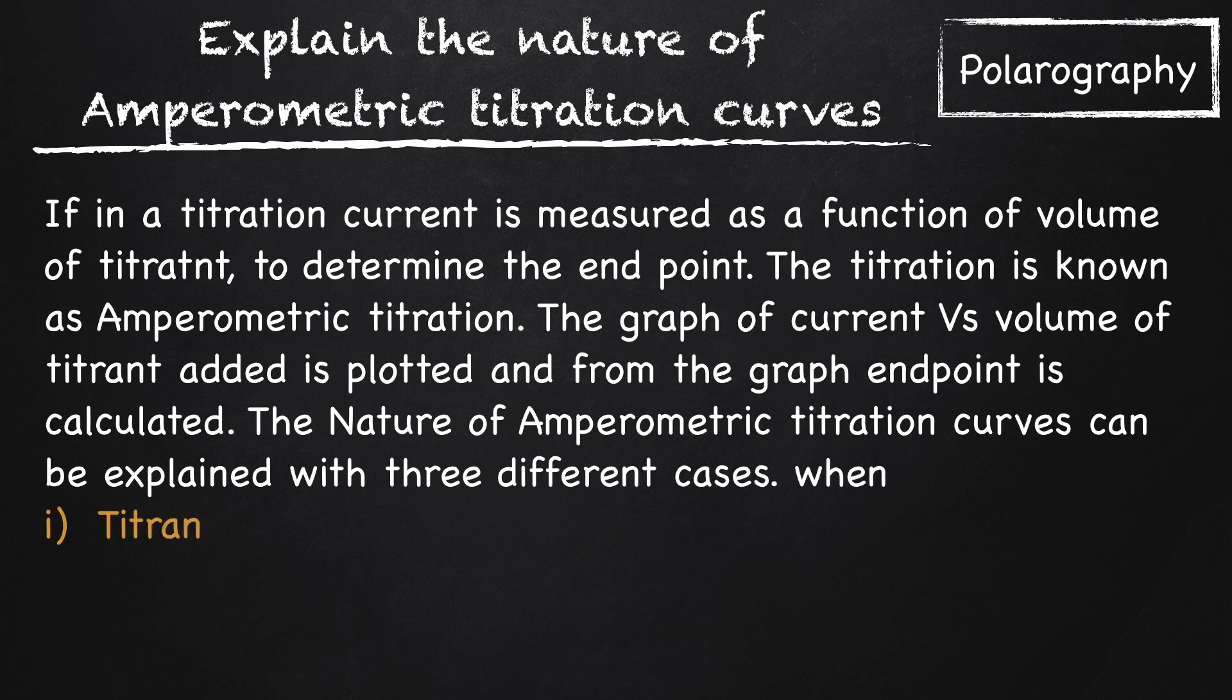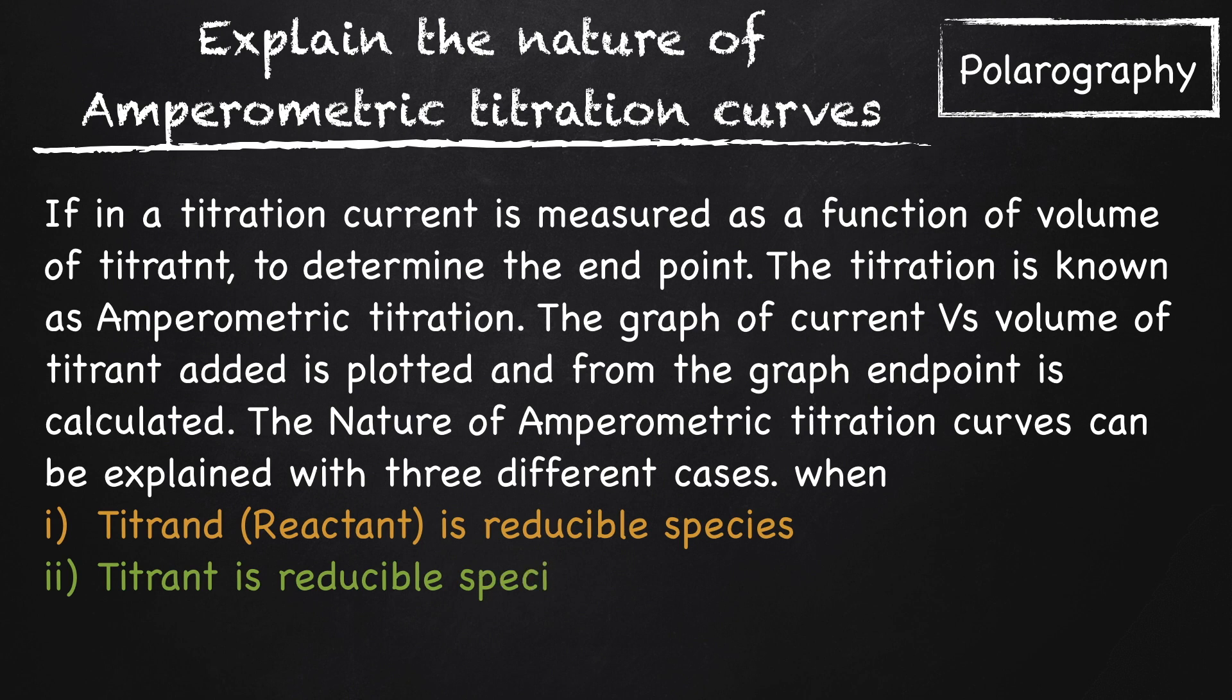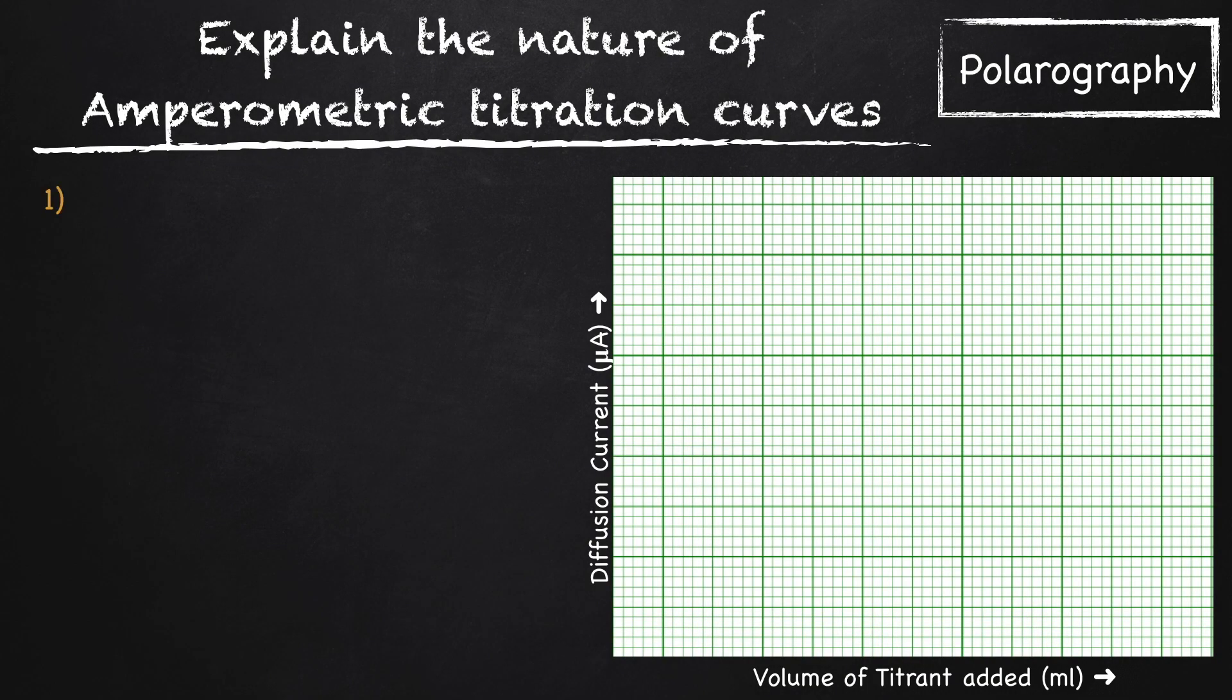First, when titrand or reactant is reducible species. Second, titrant is reducible species. And third, both titrand and titrant are reversible species. So let's take the first case, titrand or reactant is reducible species.